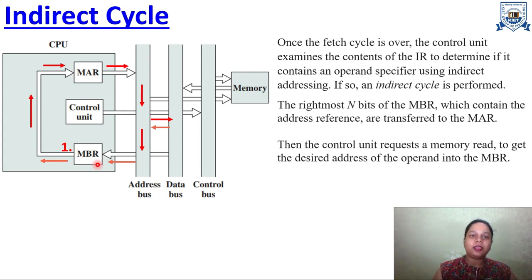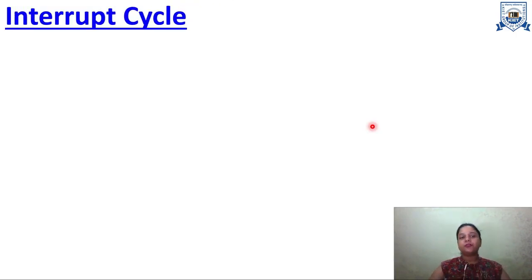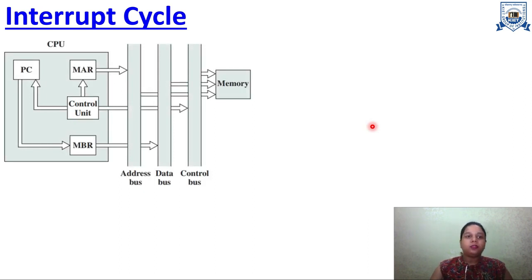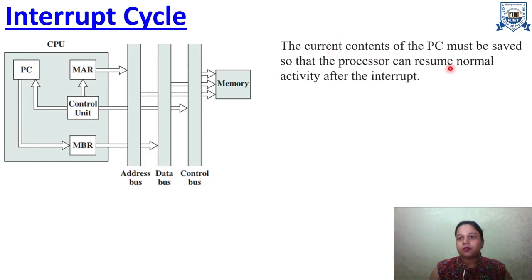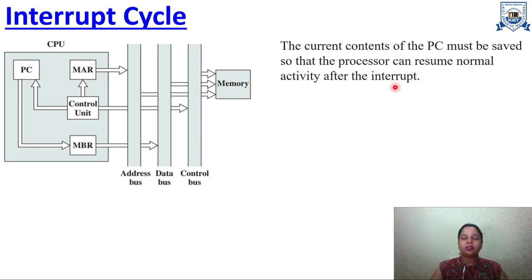Now let's learn about the Interrupt Cycle. The interrupt cycle only occurs when there is an interrupt during the execution of an instruction. The current contents of the PC must be saved so that the processor can resume normal activity after the interrupt. If PC contents are not saved, after returning from the interrupt the data will be lost and the instruction that was being executed will not be completed.